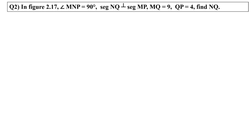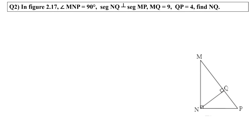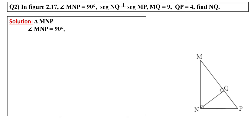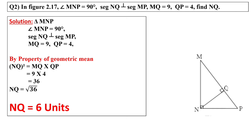Now question number 2. In figure 2.17, angle MNP is 90 degree, segment NQ is perpendicular to segment NP, NQ is equal to 9, QP equal to 4. Find NQ. If you see in the figure, triangle MNP is a right angle triangle, angle N is 90 degree and NQ is perpendicular to NP. We are going to use geometrical mean. NQ is the mean, so square of NQ equal to MQ into QP. NQ value is not given; MQ is given 9 and QP is given 4. 9 times 4 is 36, and taking square root we get NQ equal to 6 units.